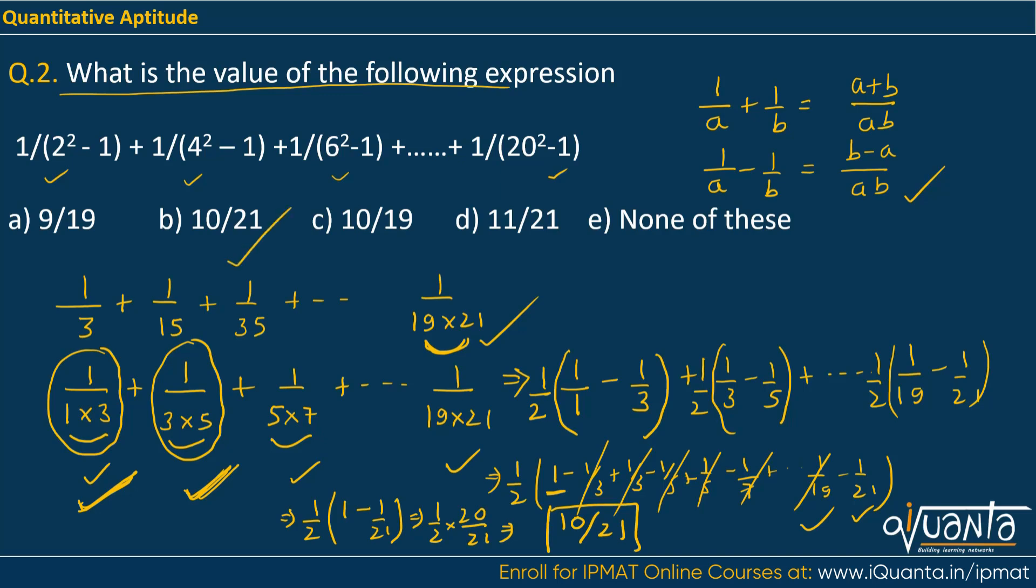In the upcoming videos we will solve a few questions with 3 terms in the denominator like 1×3×5, 3×5×7. This can be very useful, even in CAT 2019 a sum like this came up. Sometimes the denominator might be in the form of a root, so we have to rationalize. We will discuss all those things in another video. I hope the explanation is clear. Thank you.